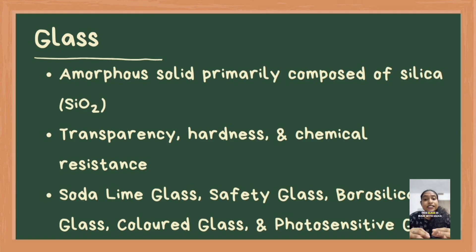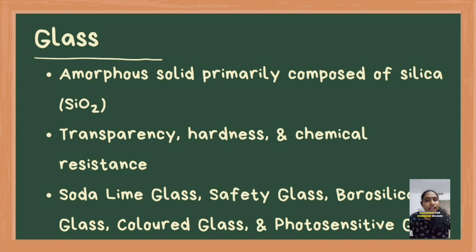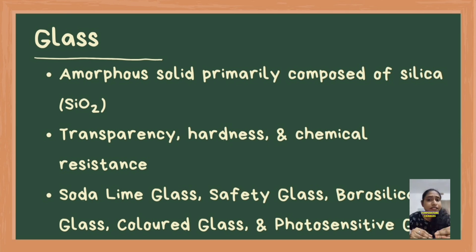Borosilicate glass is known for its excellent thermal resistance. This glass is made with silica and boric oxide. It's used in laboratory glassware and cookware because it can withstand certain temperature changes.